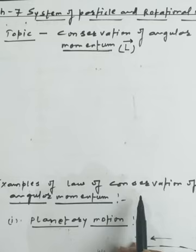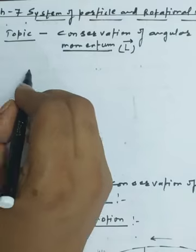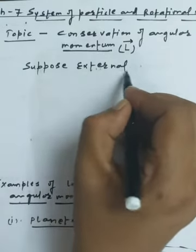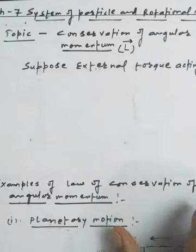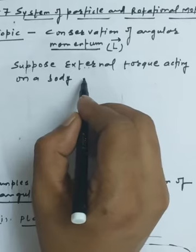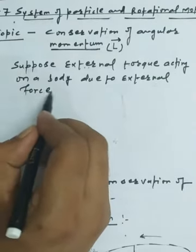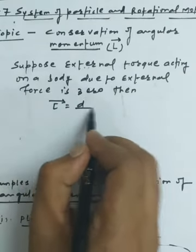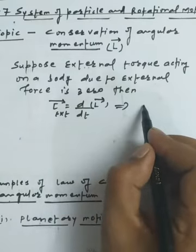First, we want to discuss the conservation of angular momentum. Suppose external torque acting on a body due to external force is zero. Then we can say that torque is equal to dL/dt, and this is the external torque. We are assuming this is zero.